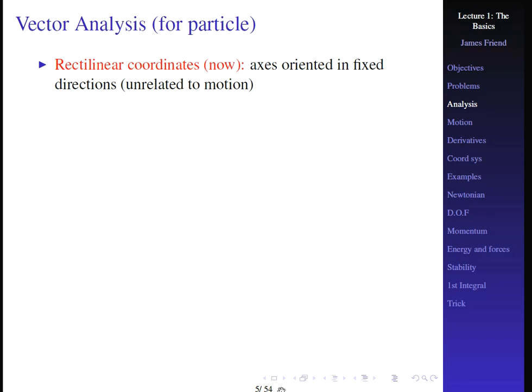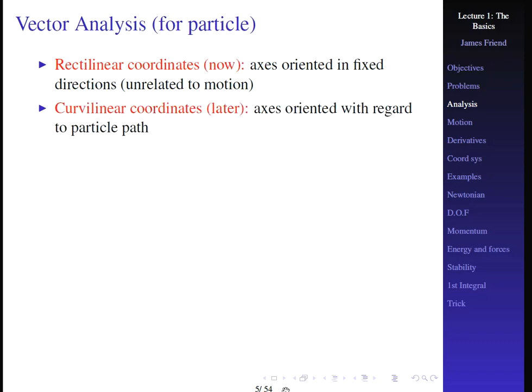When we talk about vector analysis for a particular particle — we'll talk about many particles later — we'll discuss rectilinear coordinates, where axes are oriented in fixed directions not particularly related to the motion (Cartesian coordinates). We'll also talk about curvilinear coordinates, where axes are oriented with regard to the particle path. So as a particle such as an airplane changes direction, the direction of the coordinates also changes.